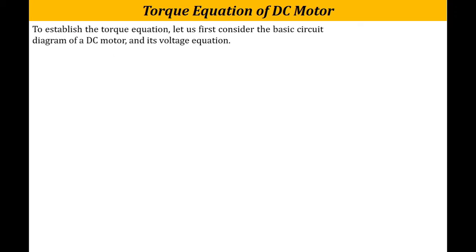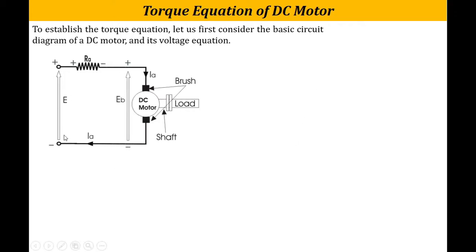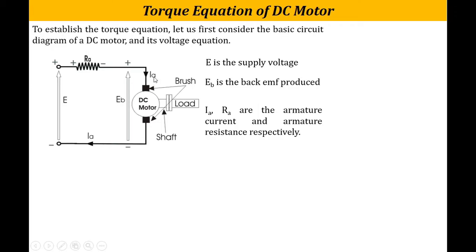Now let's discuss the torque equation of a DC motor. Consider this circuit diagram. Here E is the supply voltage, Ra is the armature resistance, Eb is the back EMF produced, and Ia is the current flowing through the armature. The load is connected to the shaft. From this diagram we can write: E = Eb + Ia × Ra.